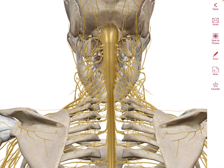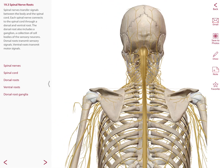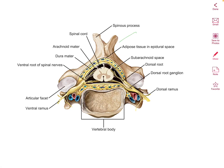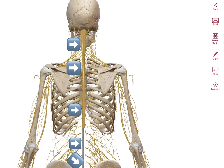The spinal cord begins as an extension of the medulla oblongata at the level of the foramen magnum and terminates at level L2. The spinal cord is protected by bone-like vertebrae, by connective tissues such as the meninges, and by a fluid called the cerebrospinal fluid, or CSF. The regions include the cervical area, thoracic, lumbar, sacral, and coccygeal.